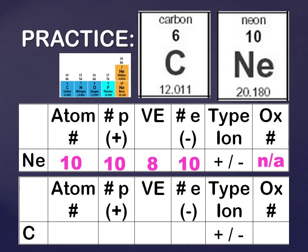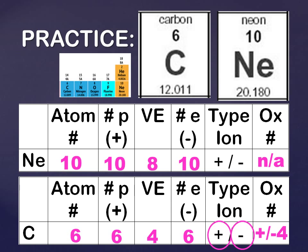Carbon's atomic number is 6, so the number of protons is 6. Valence electrons: carbon is in group 14, so we have 4. Number of electrons, same as the protons, is 6. For type of ion, valence electrons is 4 — it's equally easy to gain 4 or lose 4 electrons. So it could be positive or negative. Our oxidation number would be plus or minus 4.